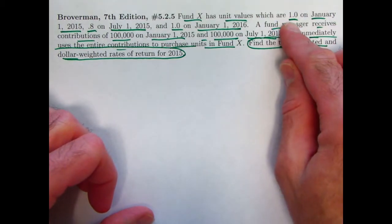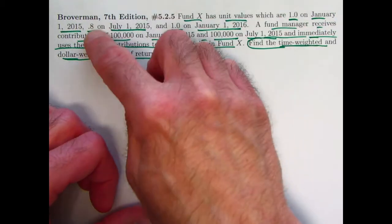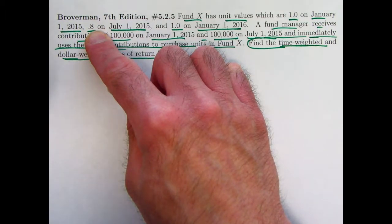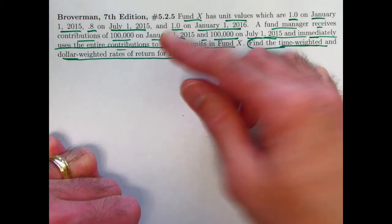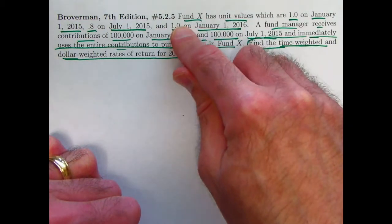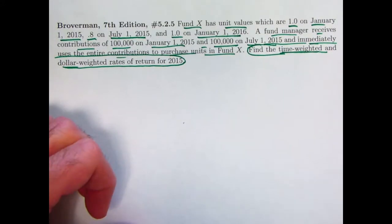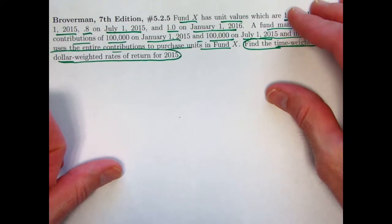So you think about the values per unit or per share. It starts out at 1.0, goes down to 0.8, going down in value by 20%, then going back up to 1.0 by the end of the year, going back up by 25% to a value that's the same as what it started at. That should be a 0% return for the time-weighted rate of return.